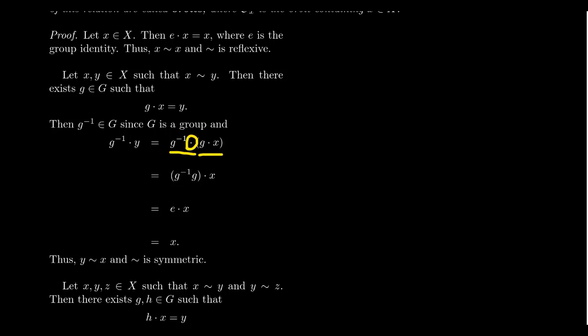So g inverse dot Y is g inverse dot g dot X. Notice you have two actions happening right here. By the compatibility axiom, we can reassociate this as g inverse g dot X, which of course g inverse times g is the identity. And then the identity acts on X, so you get X. So notice here that if there's an element that sends X to Y from the group, then its inverse will send Y back to X.